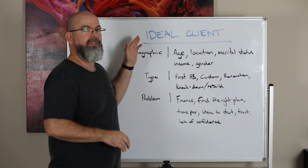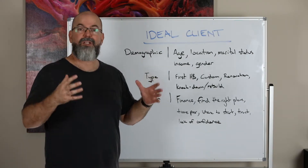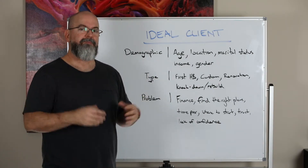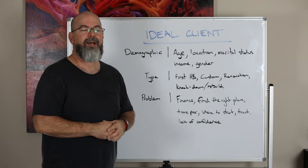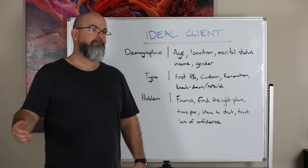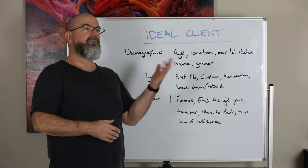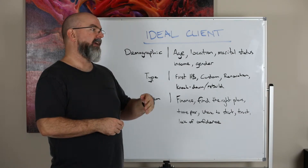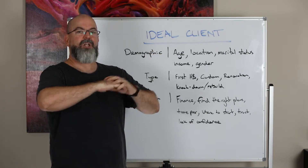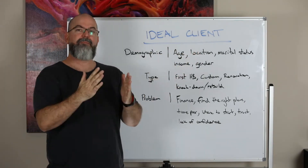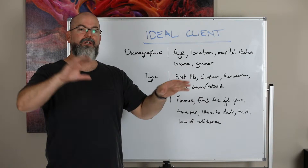The number one thing to start with is always who your ideal client is. A lot of builders, especially the smaller volume builders or bespoke custom home builders, when asked who their ideal client is, will say it could be someone from 28 to 70 years old. They could be retired or working and might live anywhere within two hours of us. They just have no real scope on who their market is.